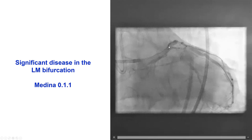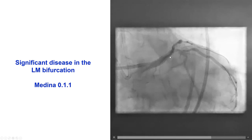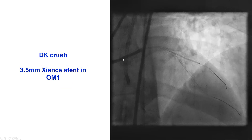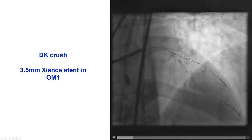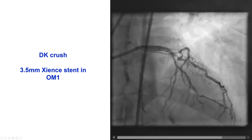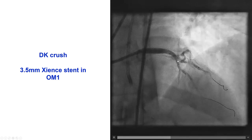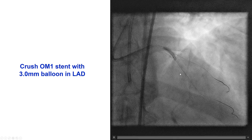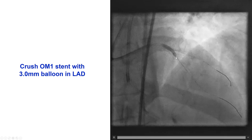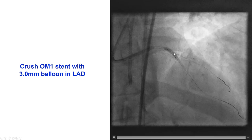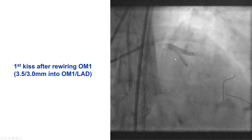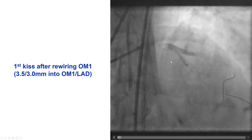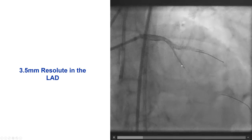This was a Medina 0-1-1 bifurcation, and we decided to stent it using the DK crush technique. We prepared both lesions, placed a 3.5 stent into the large obtuse marginal branch with a balloon in the LAD. The stent was deployed and a good result was confirmed. We came back with the LAD balloon and crushed the stent that was protruding into the left main, and then rewired for the first kissing balloon inflation, which went well.